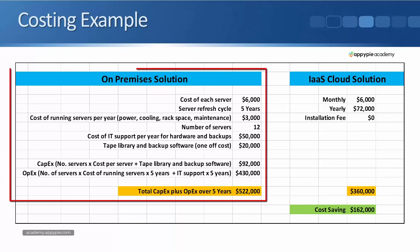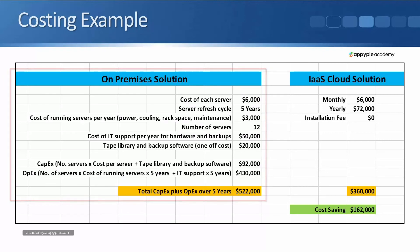Adding these together: the CapEx cost — number of servers times cost per server, plus the tape library and backup software — comes to $92,000. The OpEx cost — number of servers times cost of running the servers times the refresh cycle, plus IT support — is $430,000. So the total CapEx plus OpEx cost over five years for an on-premise solution would be $522,000.